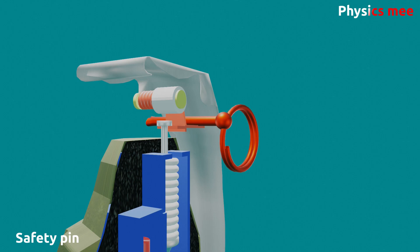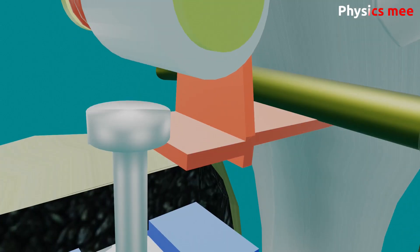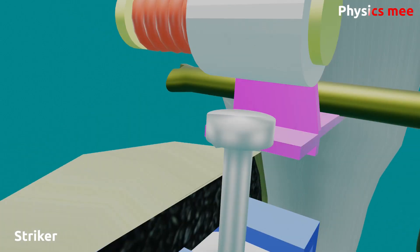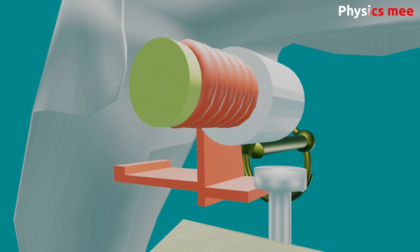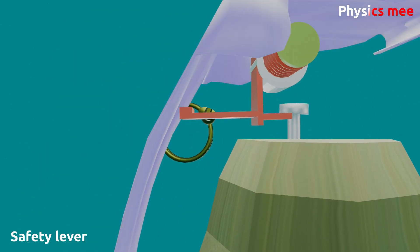This part is called the safety pin because the process can't start without taking it out. When the safety pin is taken out, the striker, which is loaded by this spring, becomes free to rotate and strikes the detonator lever.